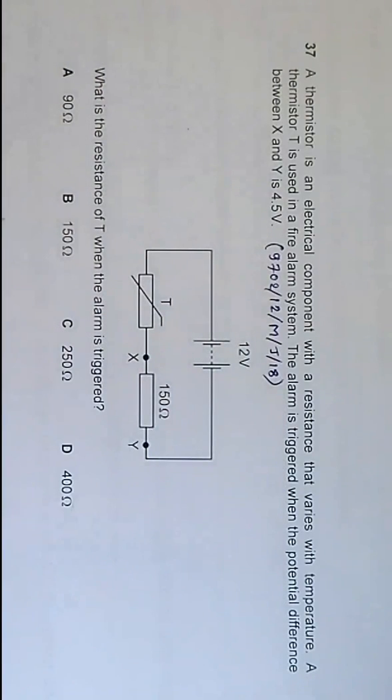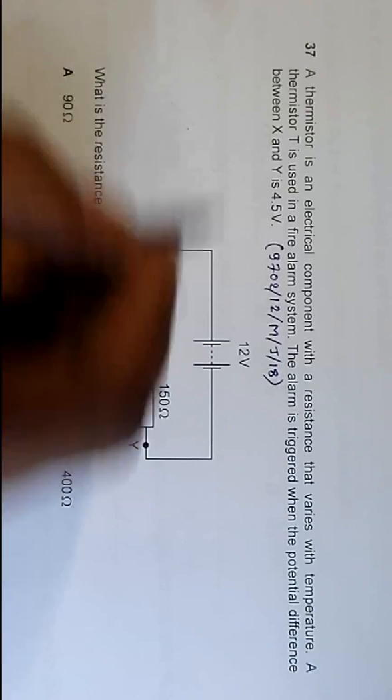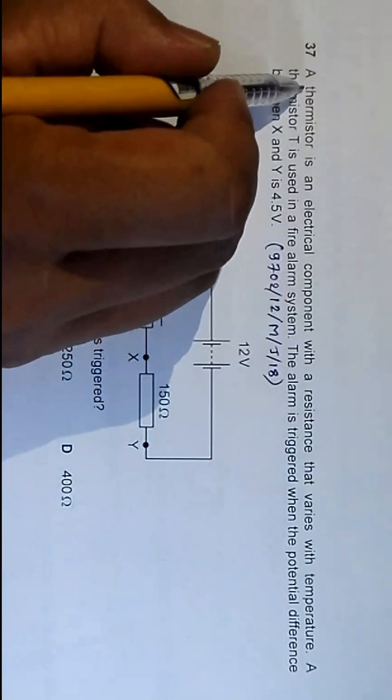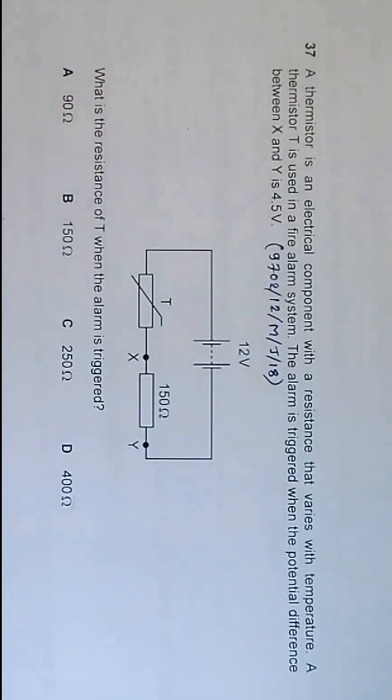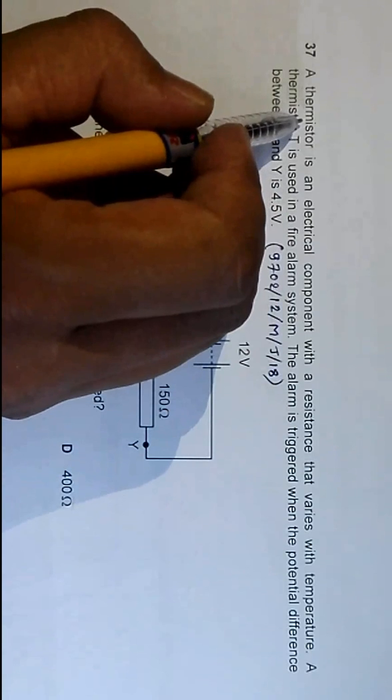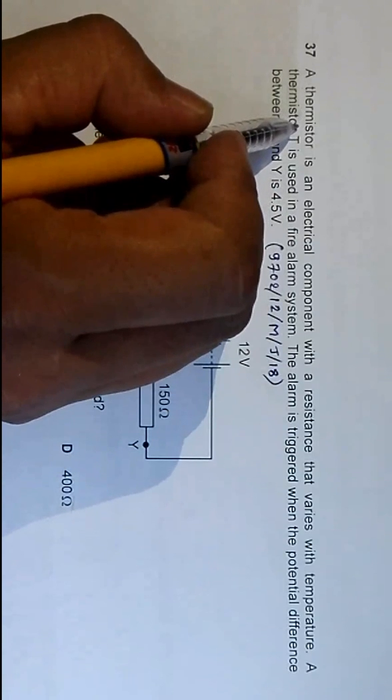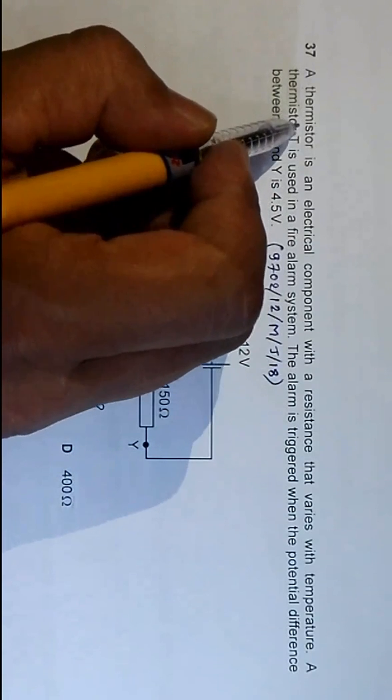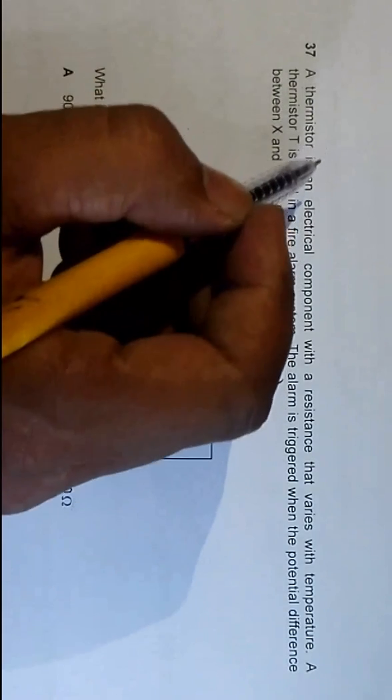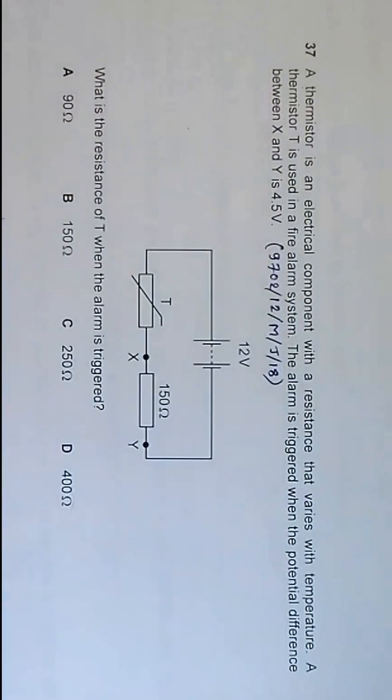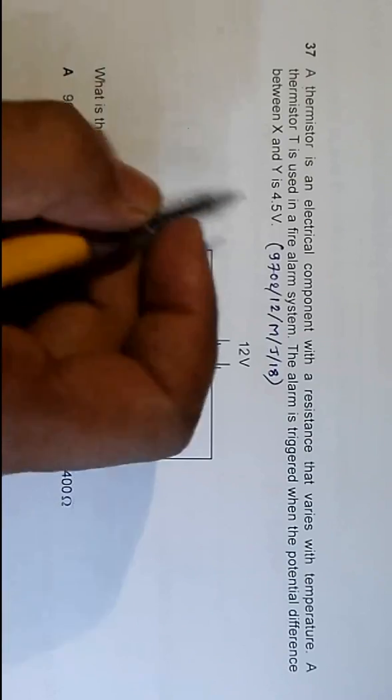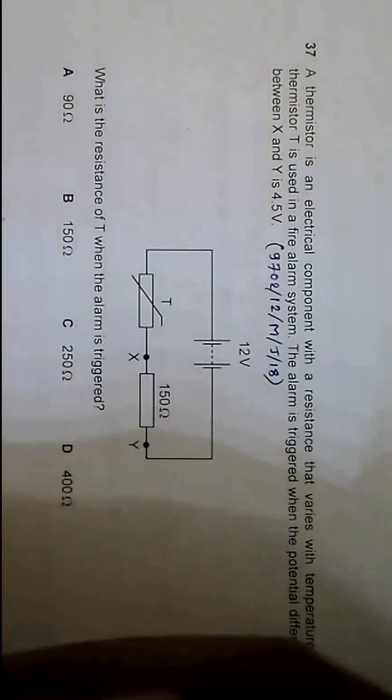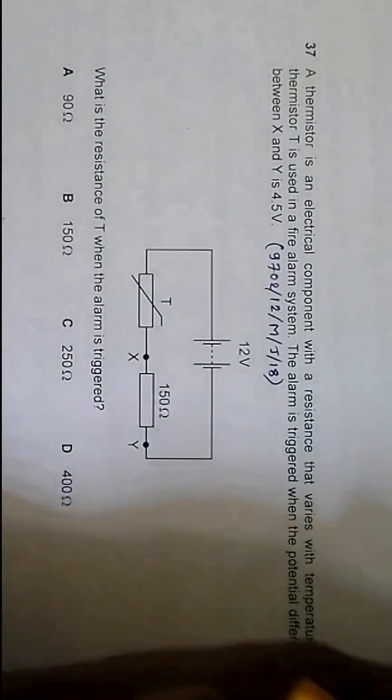So what is the resistance of T when the alarm is triggered? As per the definition, a thermistor is an electrical component with a resistance that varies with temperature. Previously this was in the AS physics course, but later it was removed and shifted to A2. Since it belongs to A2, the question is somewhat interesting.